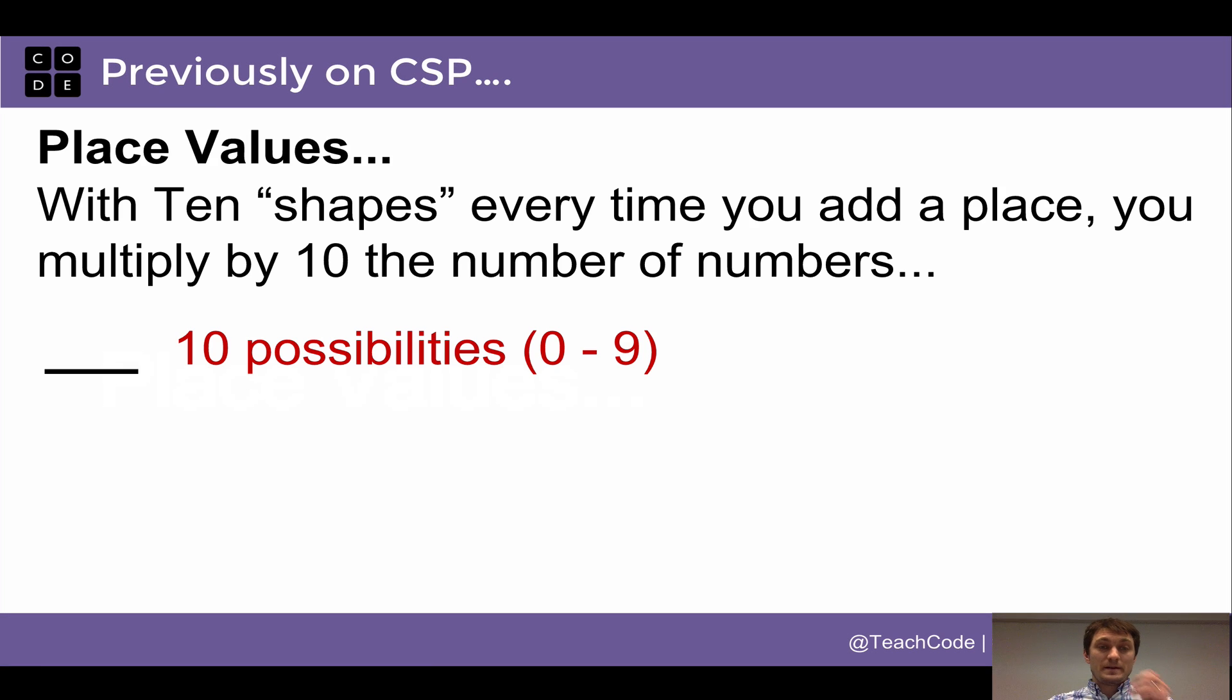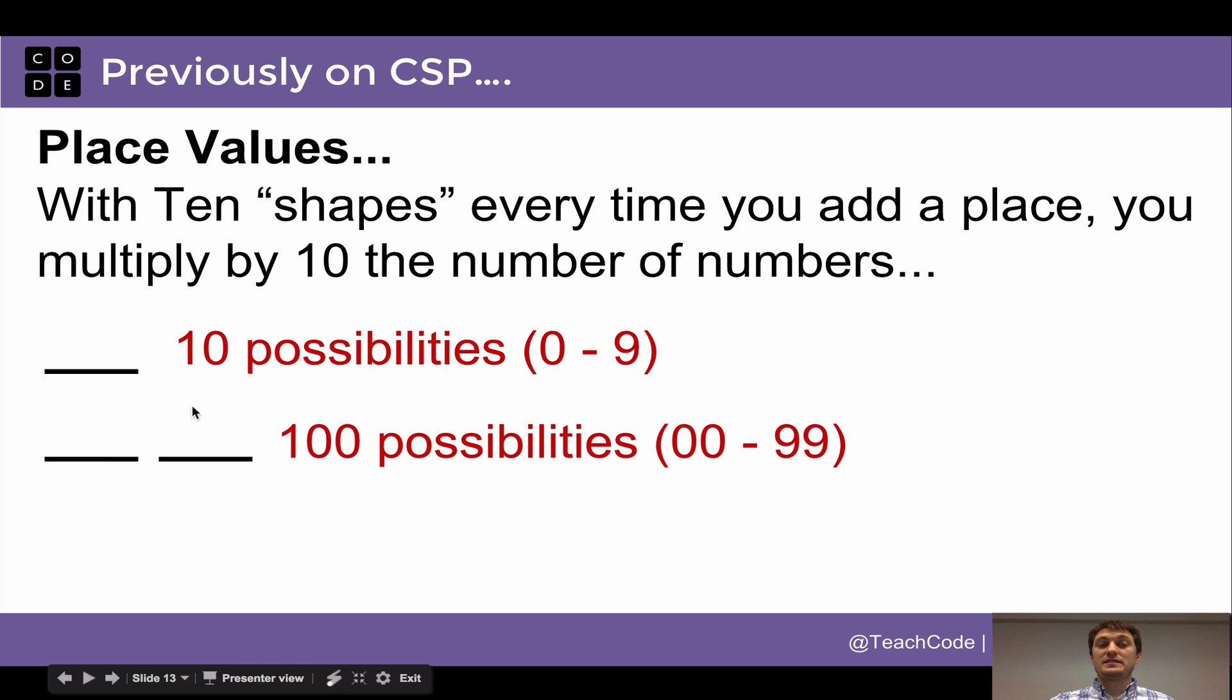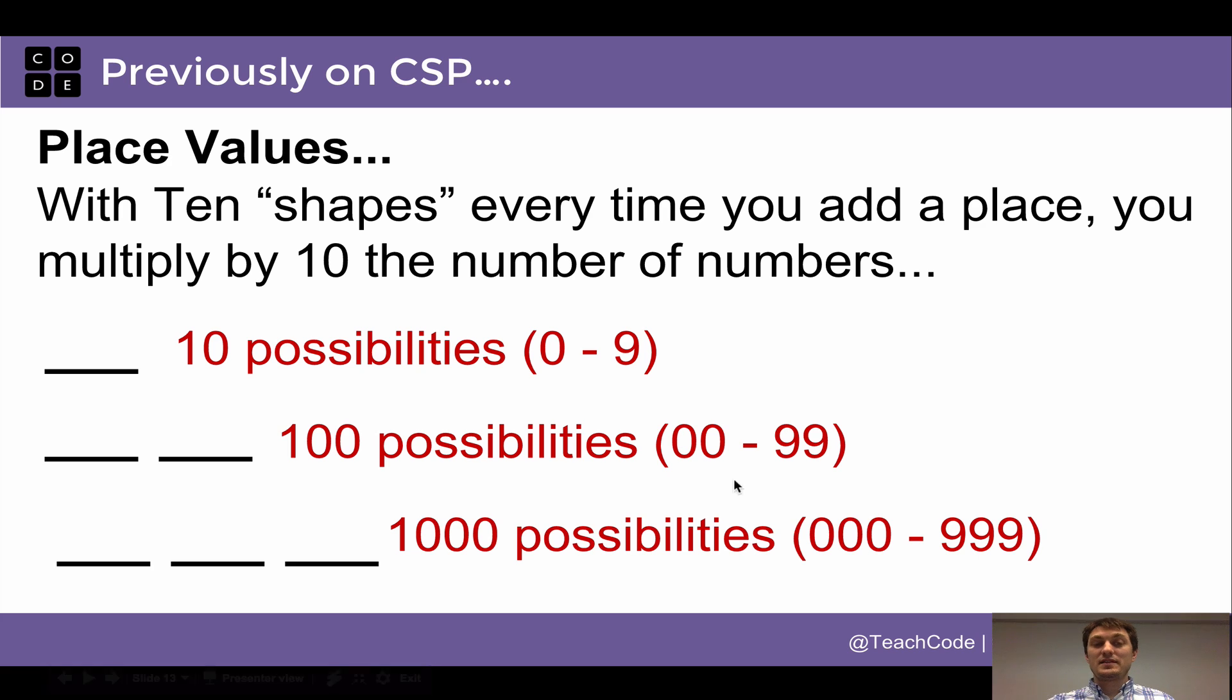So let's talk about place values. With 10 shapes, so if you think about the normal numbers, 10 shapes, every time you add a place, you multiply by 10 the number of possible numbers you can make. So if I have one place value, here there are 10 possibilities, just the numbers 0 through 9. If I have two places to work with, there are a hundred possible patterns I can make, the numbers 0 through 99. And of course, if I have three place values with 10 shapes, then there are a thousand possible ways I can make those numbers, which you know as the numbers 0 to 999.